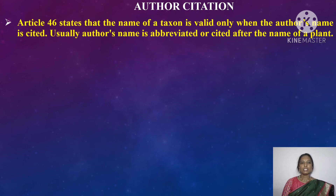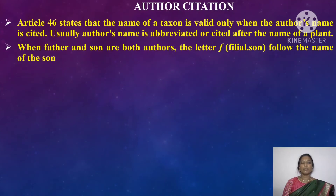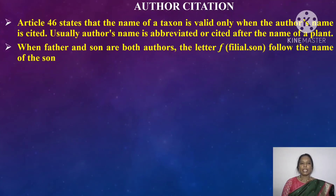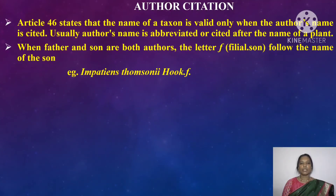Author Citation. Article 46 states that the name of a taxon is valid only when the author's name is cited. Usually, the author's name is abbreviated after the name of a plant — for example, if the plant name is given by Linnaeus, we abbreviate as 'L.' When father and son are both authors, the letter 'f.' follows the name to indicate the son. For example, Impatiens thompsonii was named by both father and son — cited as 'Hook. f.' where father is William Jackson Hooker and son is Joseph Dalton Hooker.